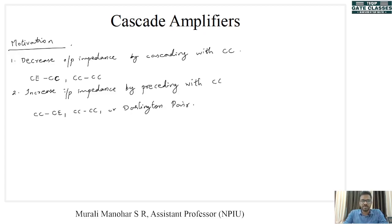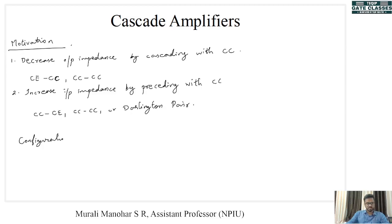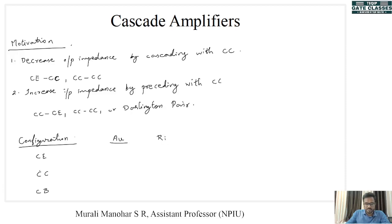Now, before getting into different amplifiers, let us see a comparison between different configurations. The different configurations are CE, CC, and CB — common emitter, common collector, and common base. We will compare them in terms of voltage gain, input impedance, output impedance, and current gain.